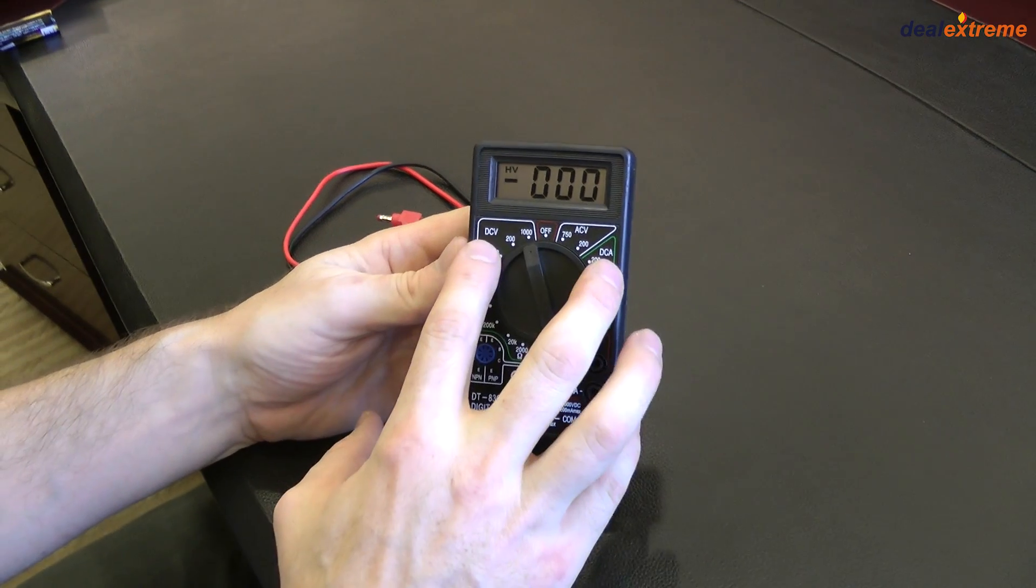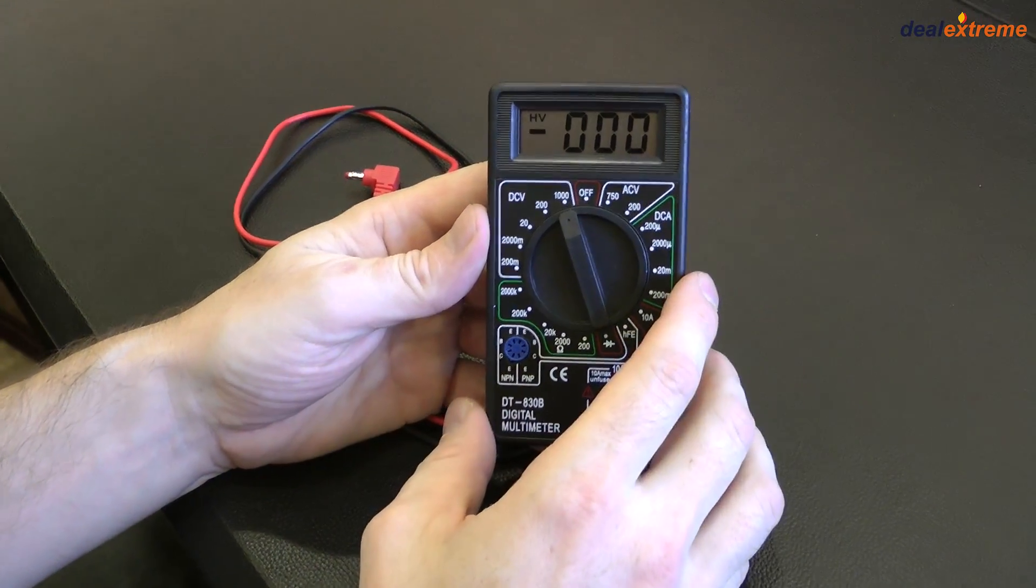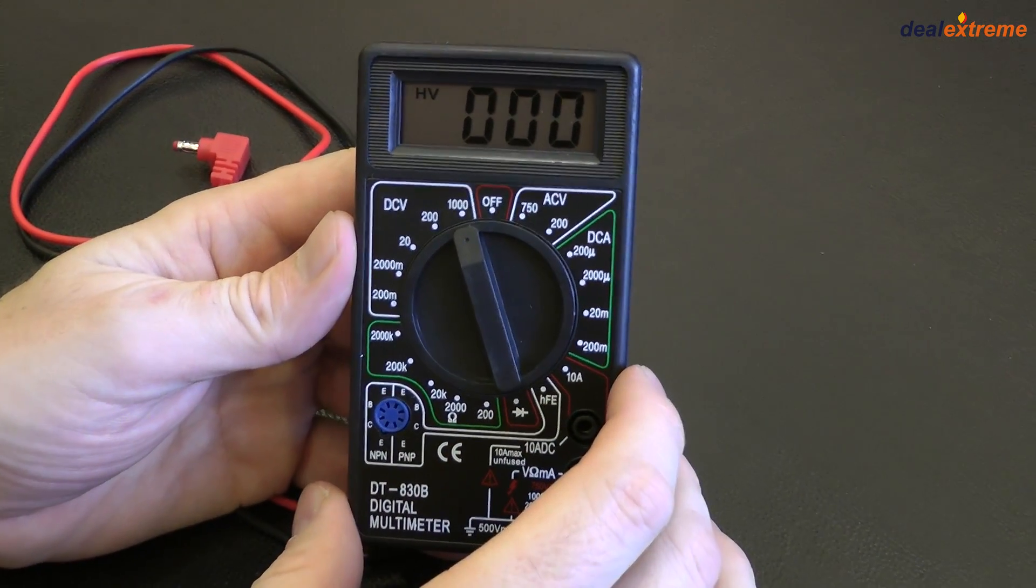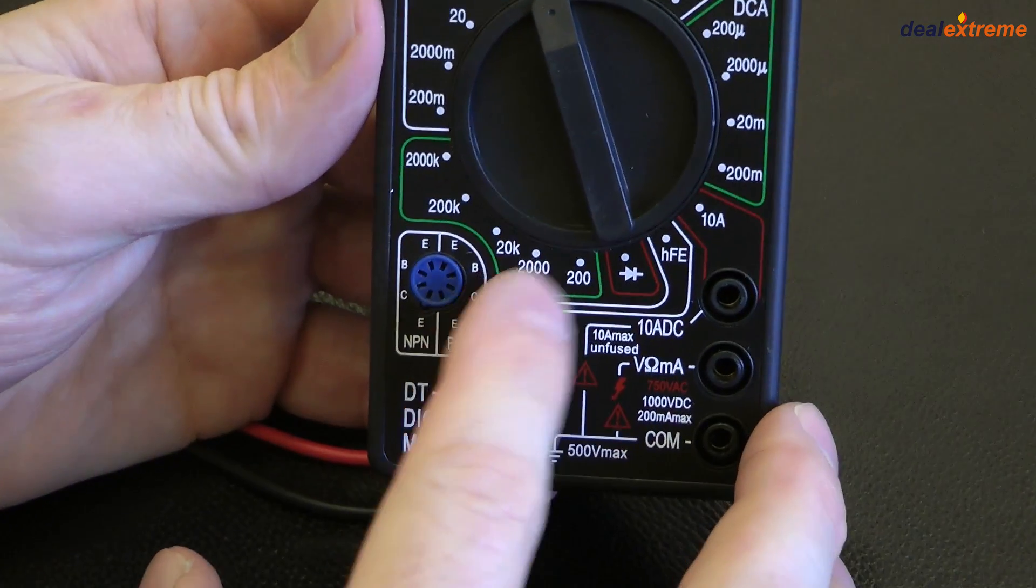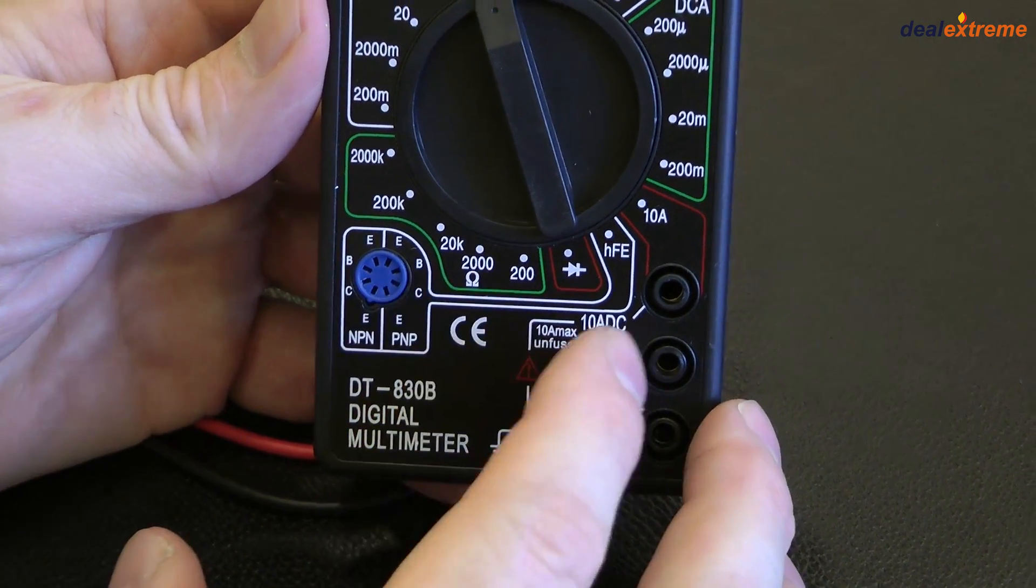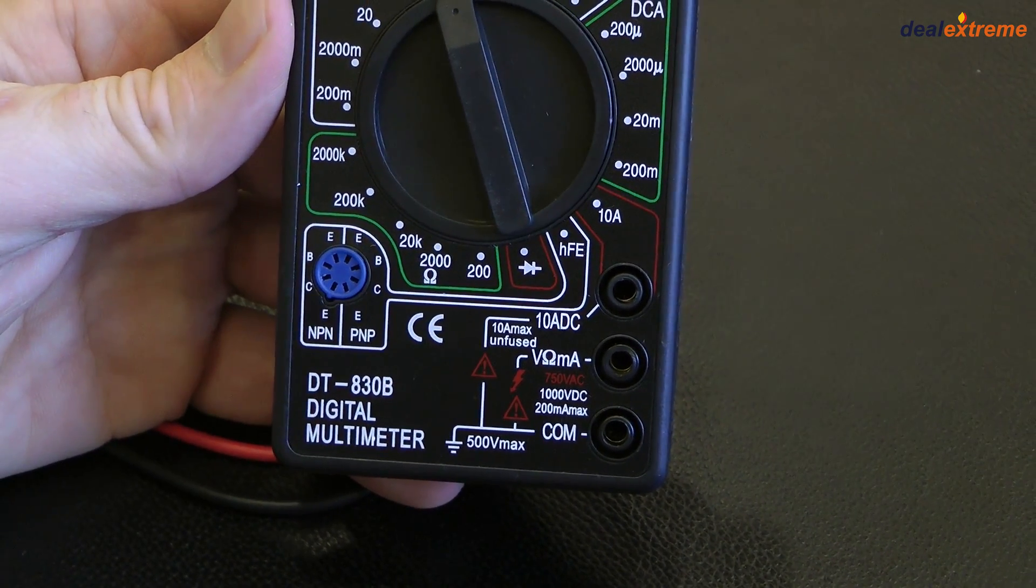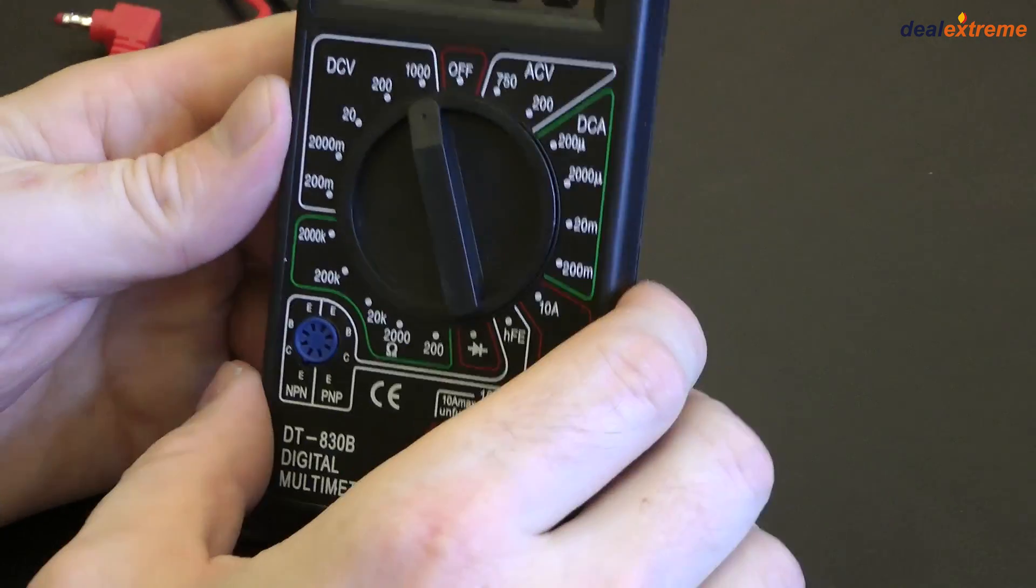And it has multiple functions: direct current voltage, alternating current voltage, direct current amperage, and resistance, ohm reading, and a few other specialty functions that are explained in the instructions. But those are the basics. So let's check it out.